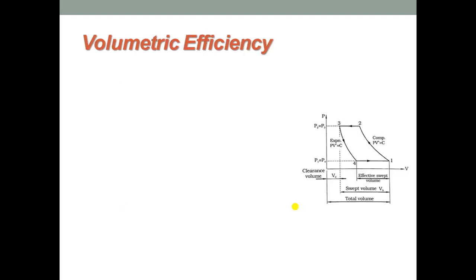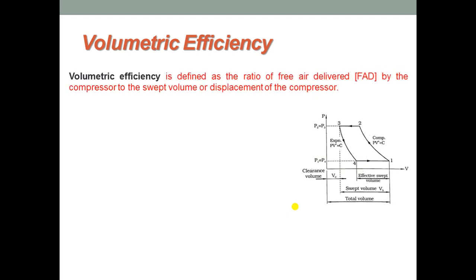Volumetric efficiency is defined as the ratio of free air delivery (FAD) delivered by the compressor to the swept volume or displacement of the compressor. Mathematically, it is FAD over swept volume Vs. FAD is given by V1 minus V4, and the swept volume is given by V1 minus V3, as observed in the PV diagram.